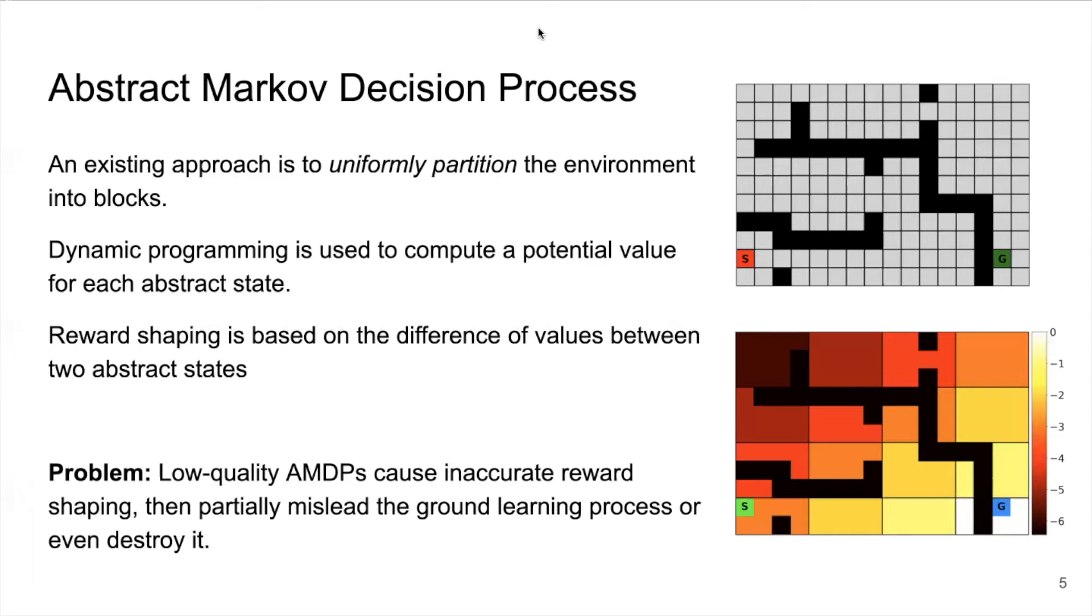However, the AMDP generated by the uniform approach is not perfect. The consequent reward shaping is not accurate enough and it would partially mislead the ground learning process. More specifically, in the same abstract state, two ground states could be topologically pretty far from each other but sharing the same potential value. Besides, in certain areas, reward shaping from uniform approach could even prevent the agent from learning the optimal policy.